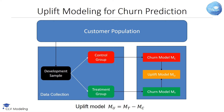Next, we develop a churn model for the control group, MC, and a churn model for the treatment group, MT. Both can be developed using any classification technique such as logistic regression, decision trees, etc. The uplift model is then the difference between both, as illustrated.